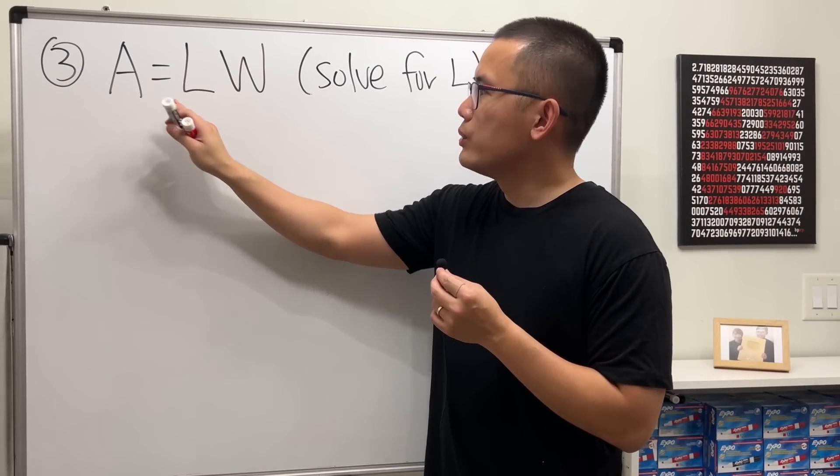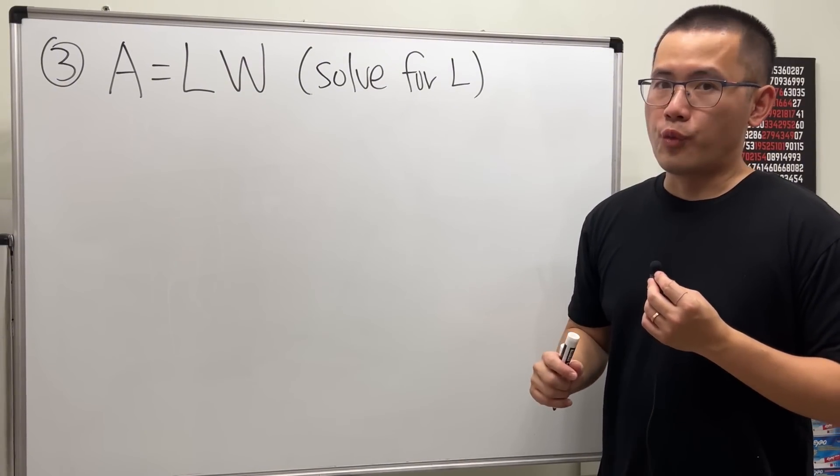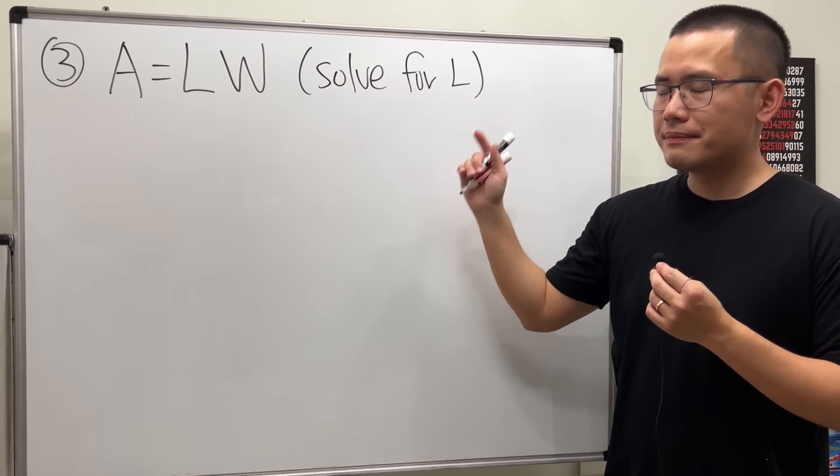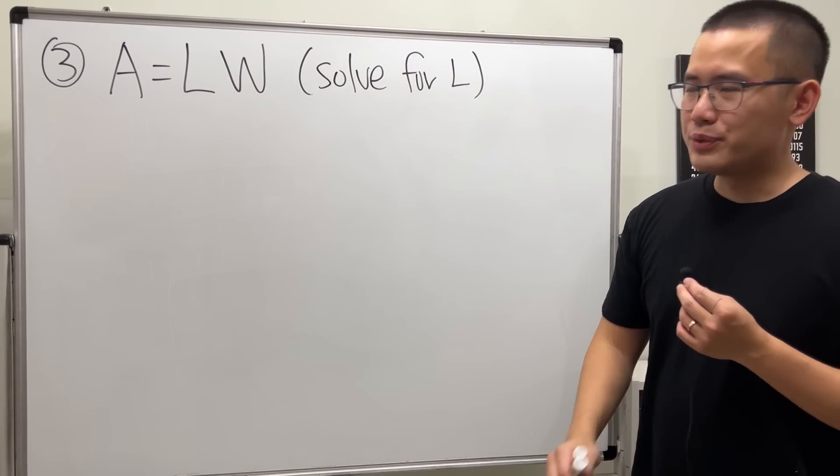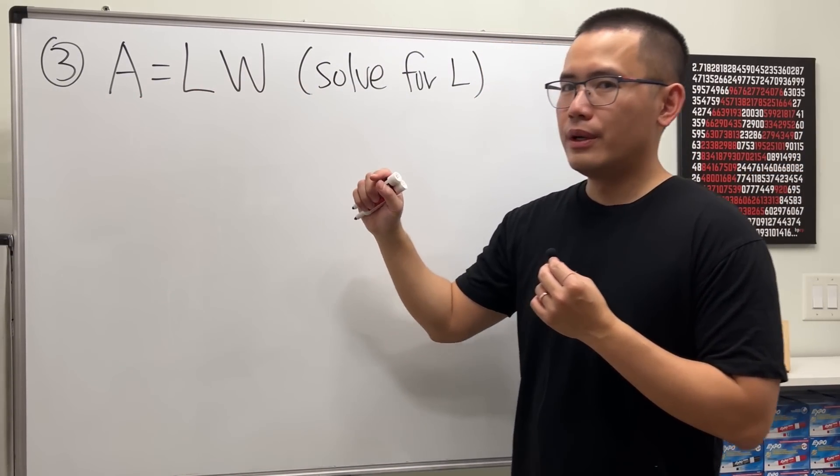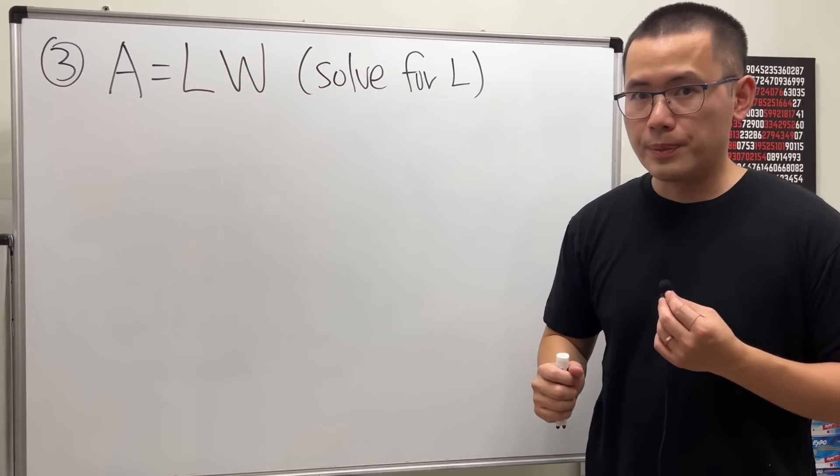For number 3, we have A equals L times W. And this is the area of a rectangle formula, length times width. And we are going to solve for L. Whenever there's no operations indicated in the middle, it means that we have a multiplication.